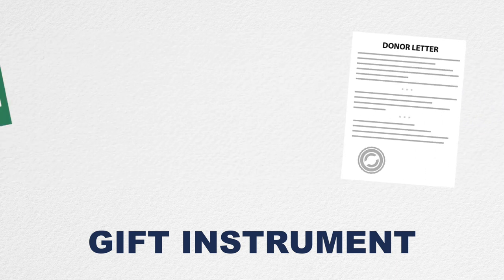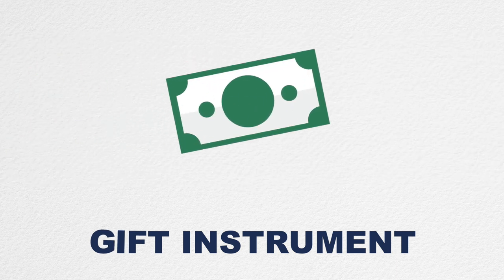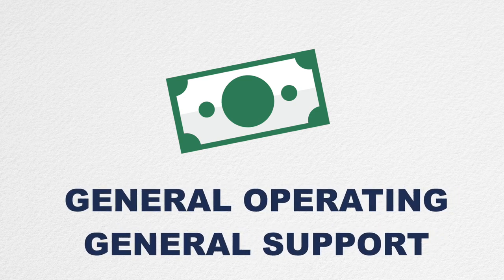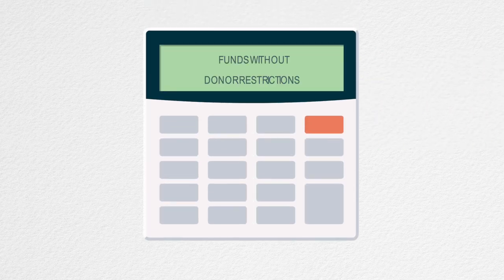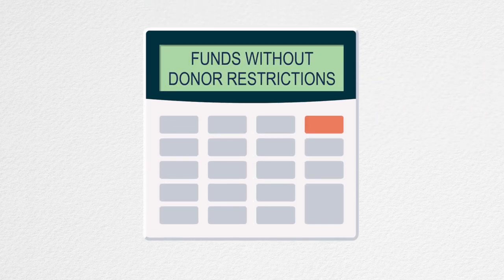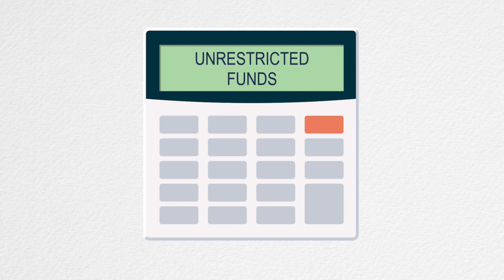Many individual contributions are given without donor restrictions, as are general operating and general support grants. If there are no restrictions placed on donations or grants, then they are considered funds without donor restrictions, or what used to be called unrestricted funds. These are likely your favorite kind, because you can use them for whatever is most needed.